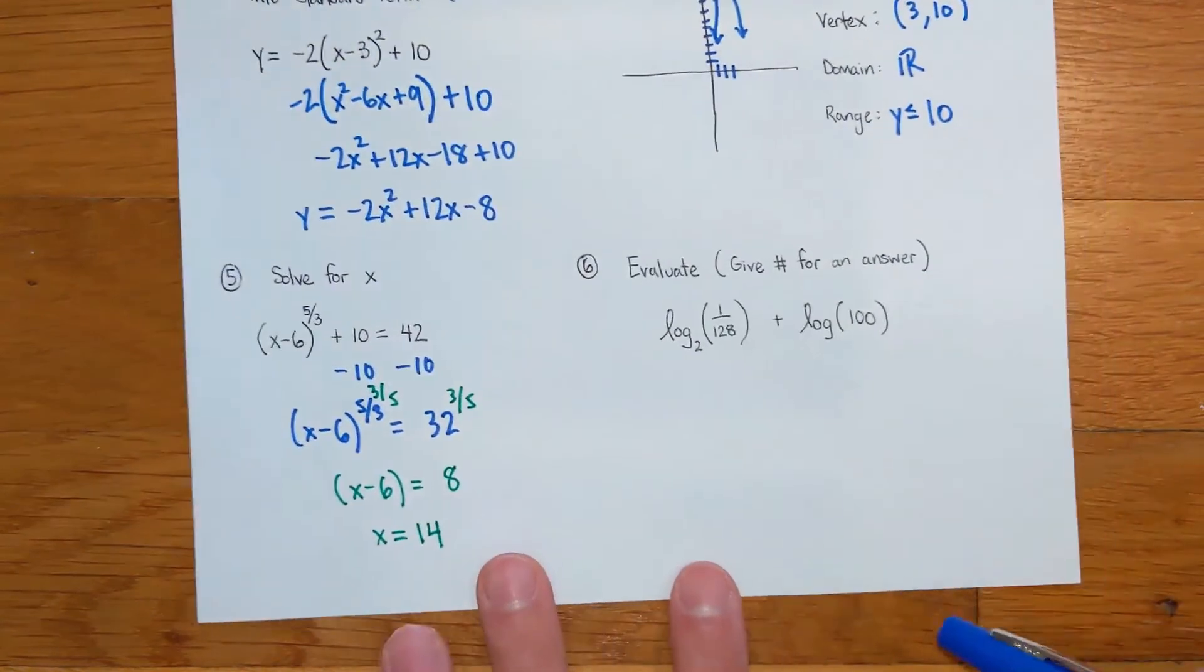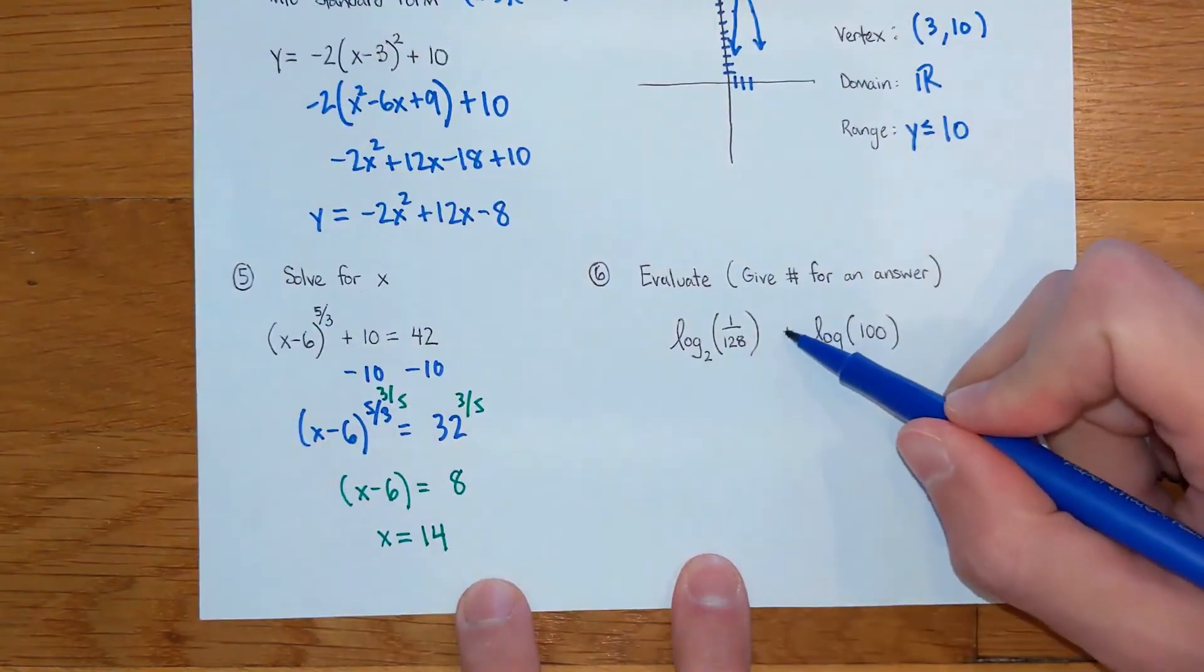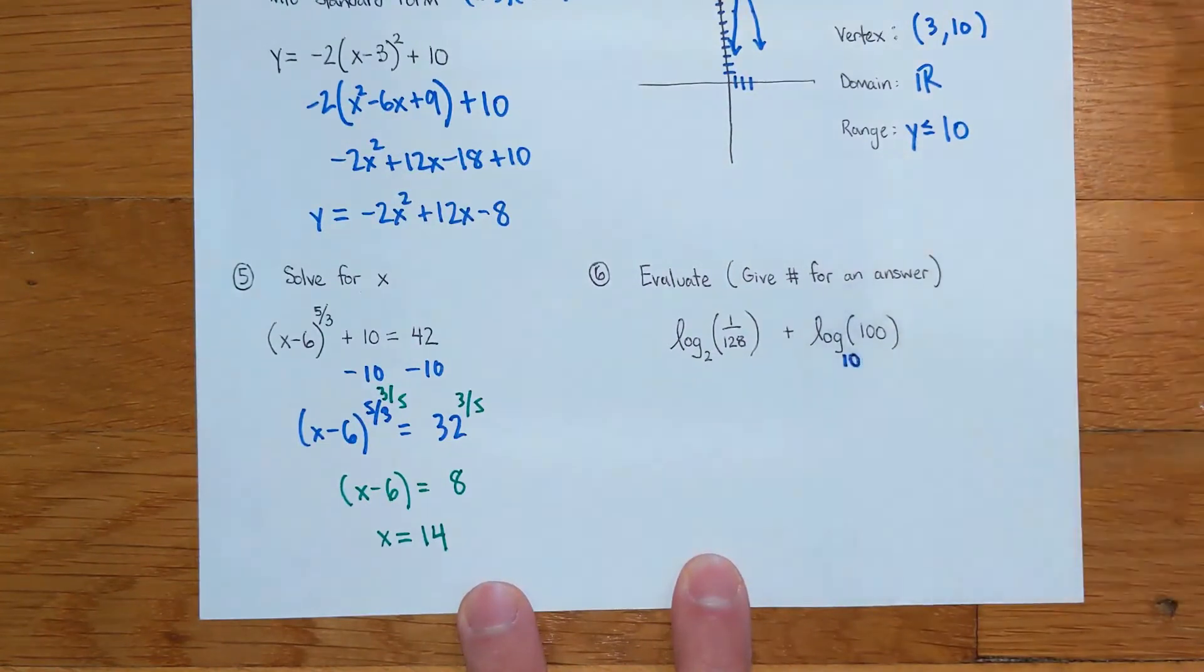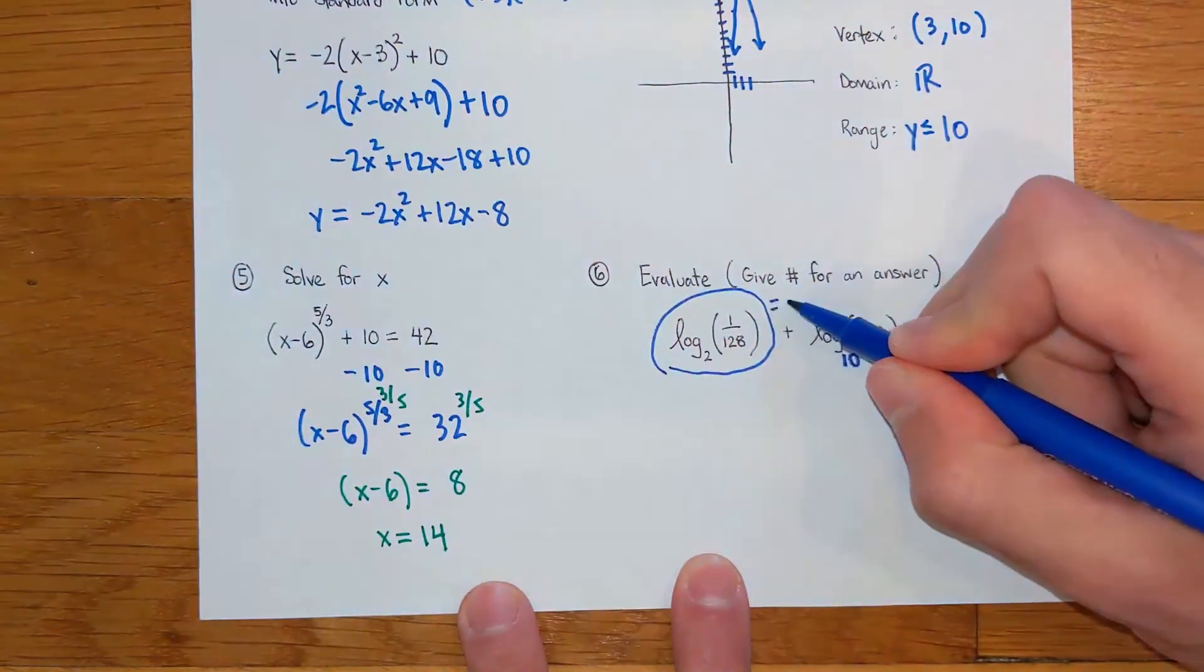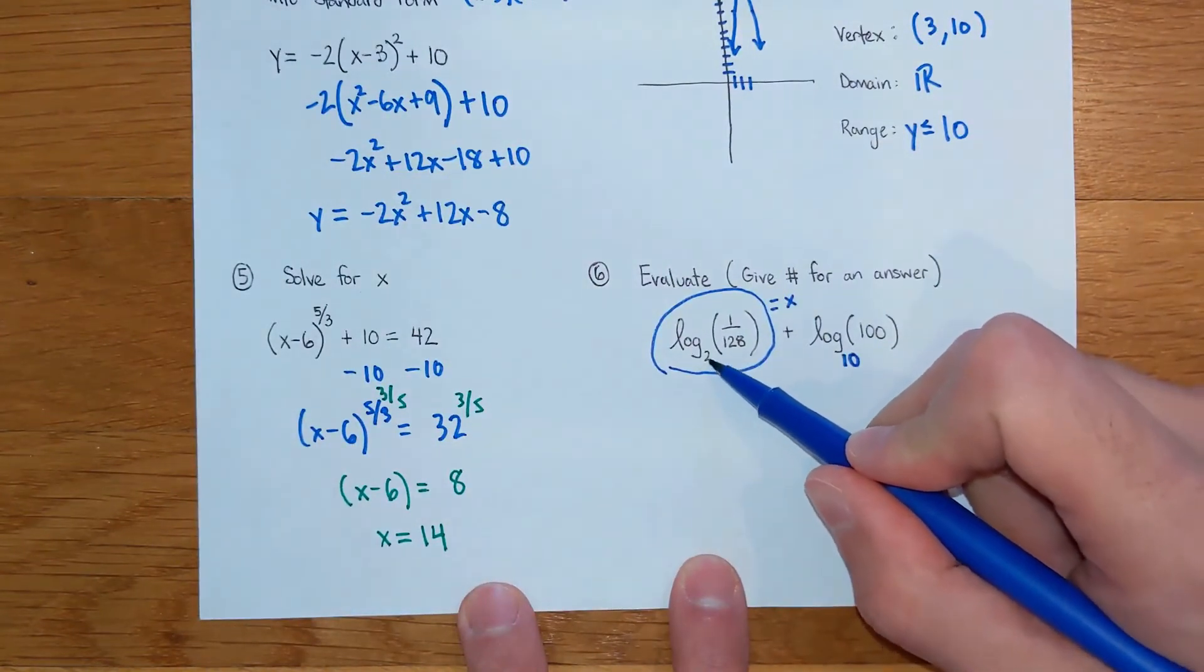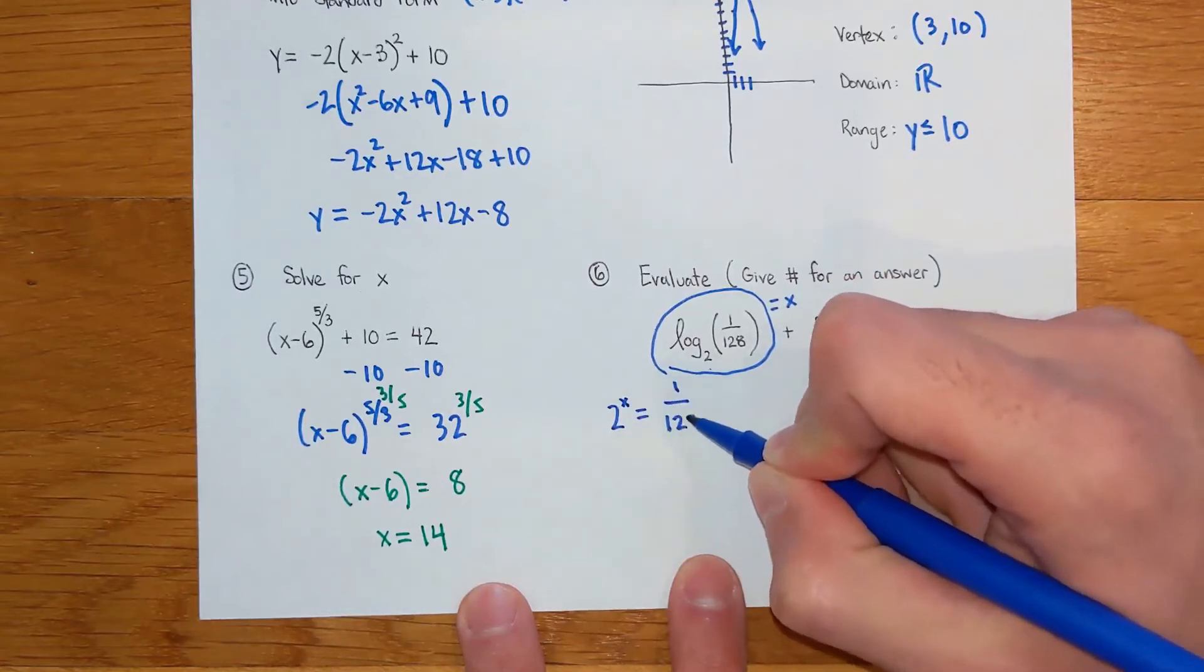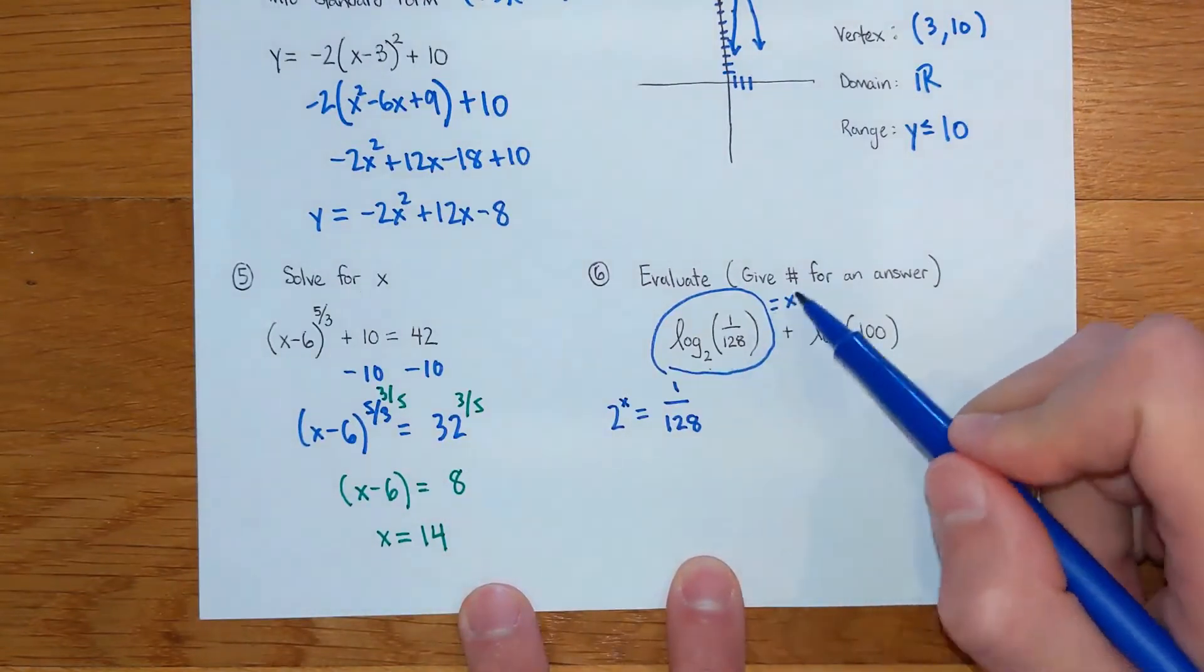Okay, number six is asking us to evaluate, which means they want an actual number for the answer. Best thing to do, we did talk about multiplying insides and stuff, but these are not the same base. This guy's a base two, and remember this guy, if you don't see a base, common log is base ten. Best thing to do is just get separate answers for these two parts and then add them together. So if I do the thing that I talked about earlier, you would do this to this power equals here. So that is going to say two to the x equals one over 128, and I have to solve and guess and check till I get that exponent.